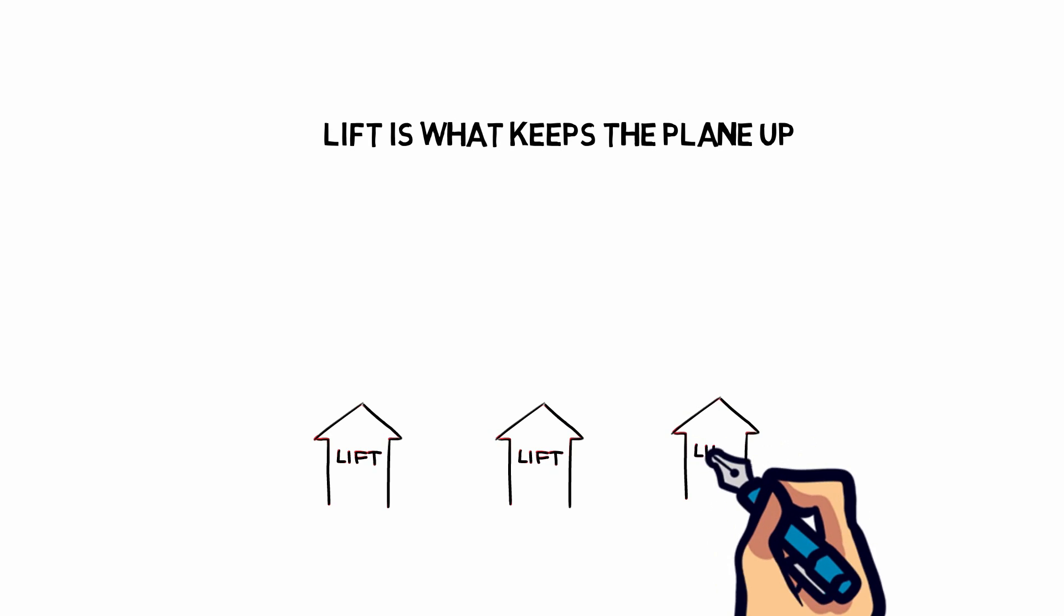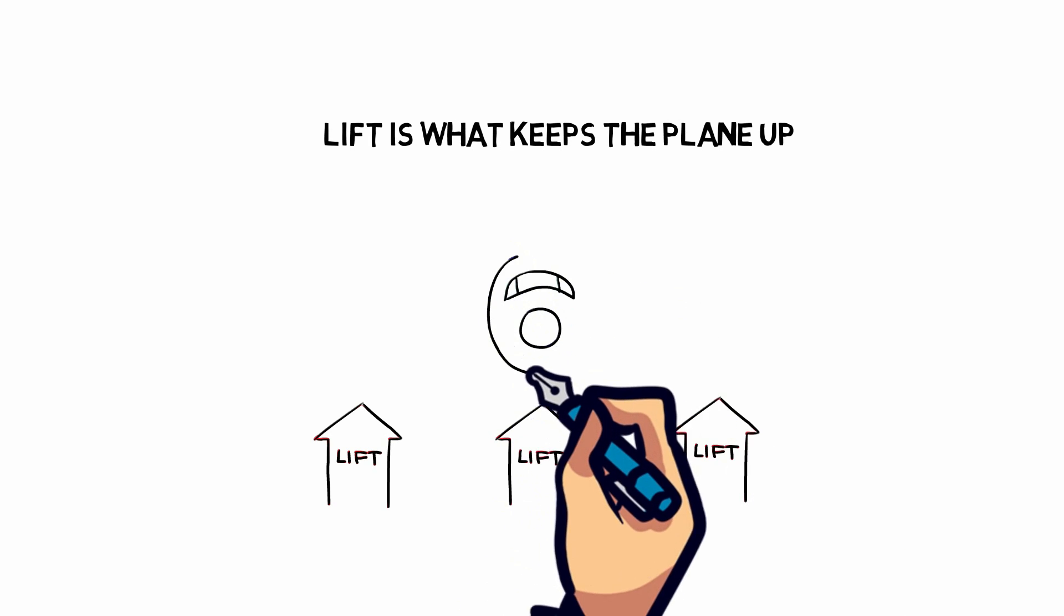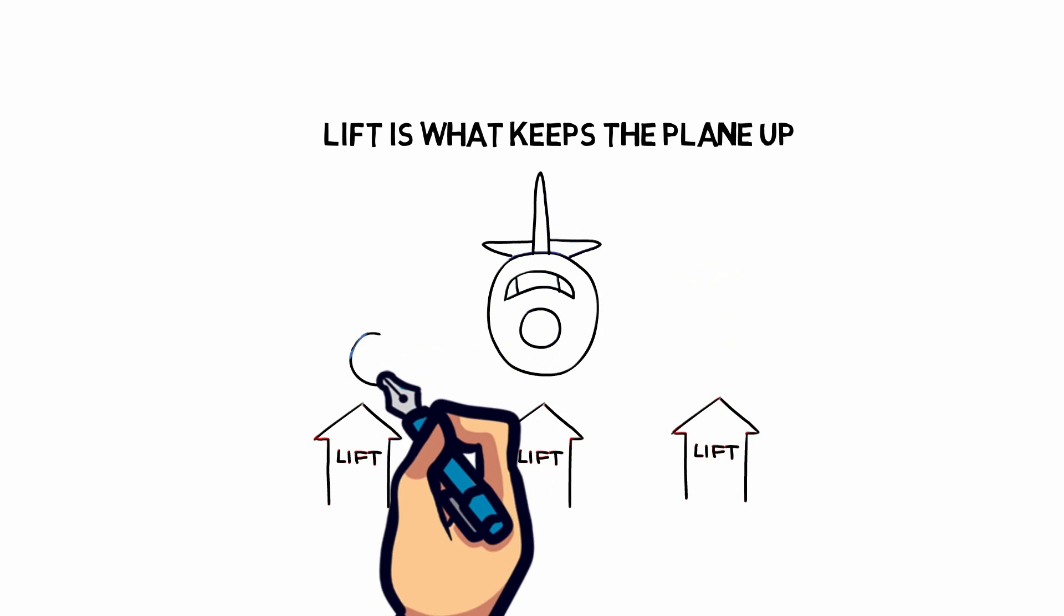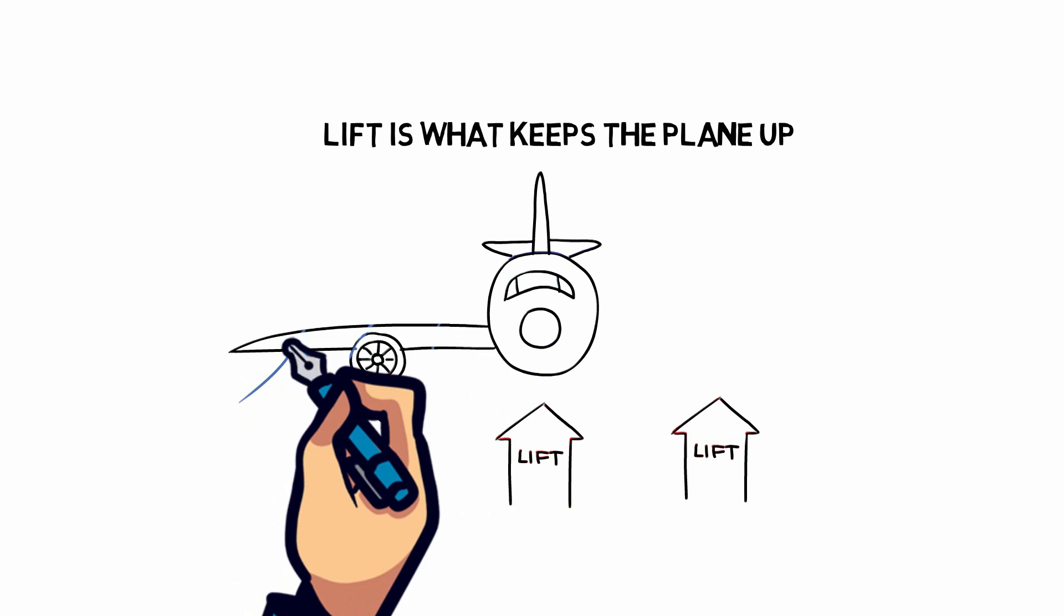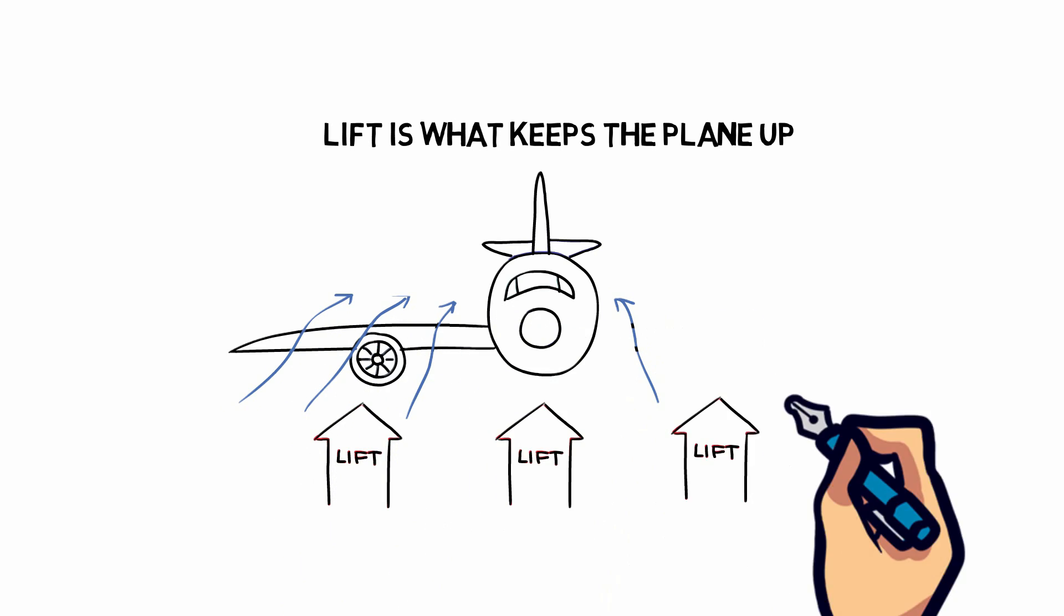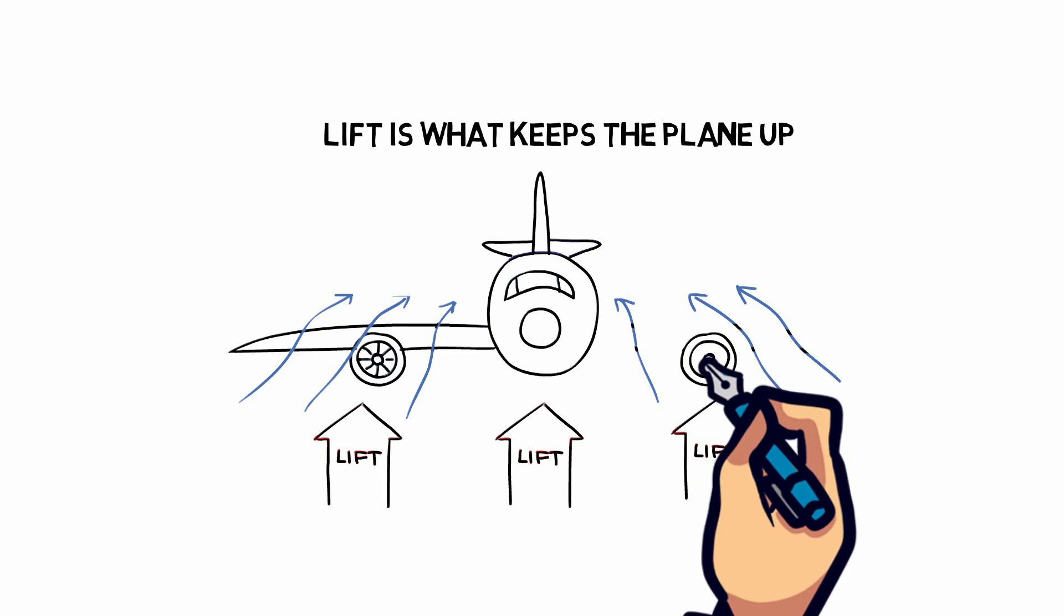This allows the air passing over the wing to move faster, which decreases the air pressure. Since the air pressure above the wing is lower than the air pressure below the wing, it causes the plane to lift.